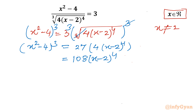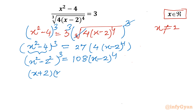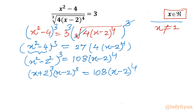Here I will use the difference of two squares: x² - 4 = x² - 2², so we can write (x + 2)(x - 2), all cubed. I can split the exponent to get (x + 2)³(x - 2)³ = 108(x - 2)⁴. Since x ≠ 2, I can cancel (x - 2)³ from both sides.